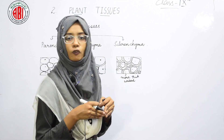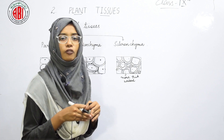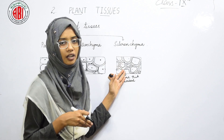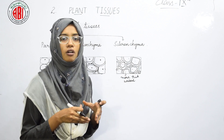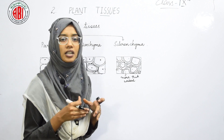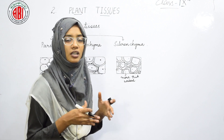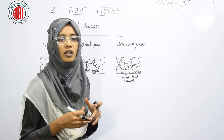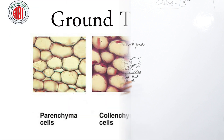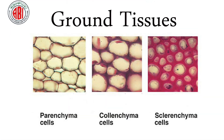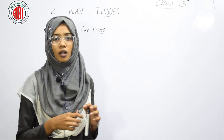Sclerenchyma can only be found in the hard wood of the trunk, which is why we cannot press it. But parts like flowers or leaves are soft because they are made up of soft tissues that show air spaces between them. So parenchyma, colenchyma, and sclerenchyma together constitute the ground tissue, forming the bulk or base of the plant body.